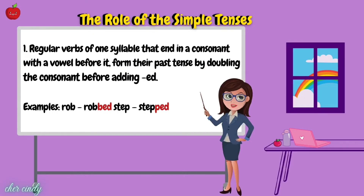Rule 1: Regular verbs of one syllable that end in a consonant with a vowel before it form their past tense by doubling the consonant before adding ED. Examples: rub → rubbed, step → stepped.